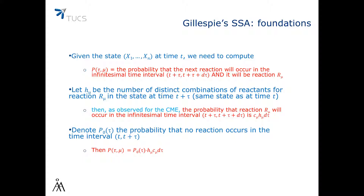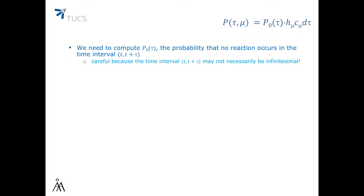We will denote by P0 of tau the probability that no reaction occurs in the time interval from t to t plus tau. We will compute P0 of tau — the probability that no reaction occurs in the time interval from t to t plus tau.